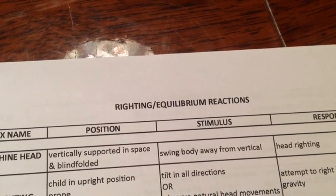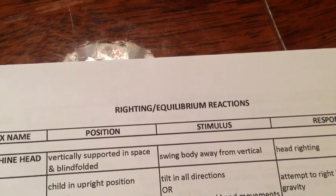This video is on riding in equilibrium. We're going to use ourselves as demonstrations as well as the baby so that you can better see. The first reflex is labyrinth head righting. The position is to vertically hold the baby. The baby is supported in space and should be blindfolded. The stimulus is swaying the body away from the vertical position, and the response should be head righting.